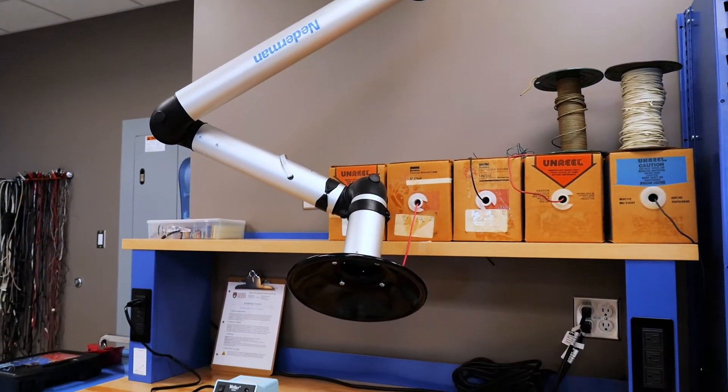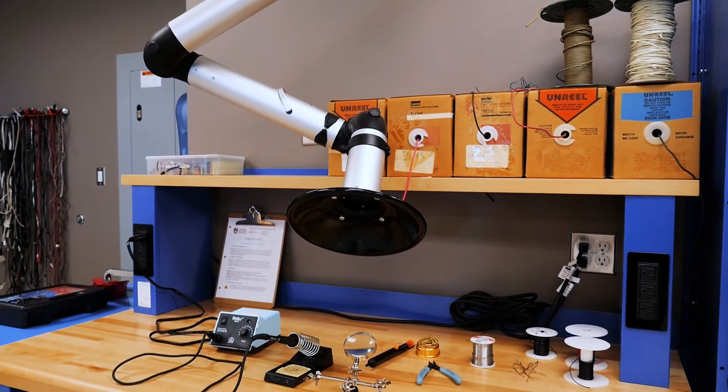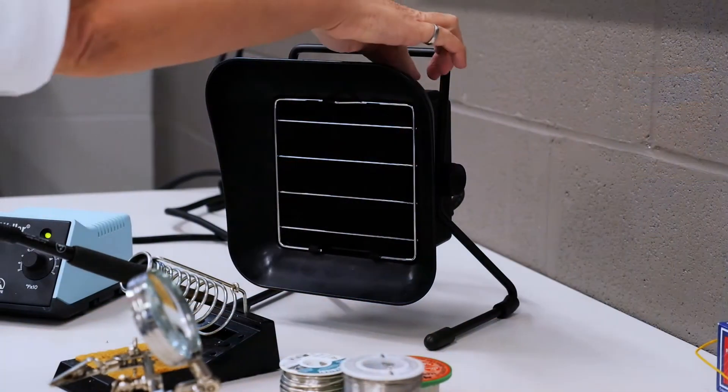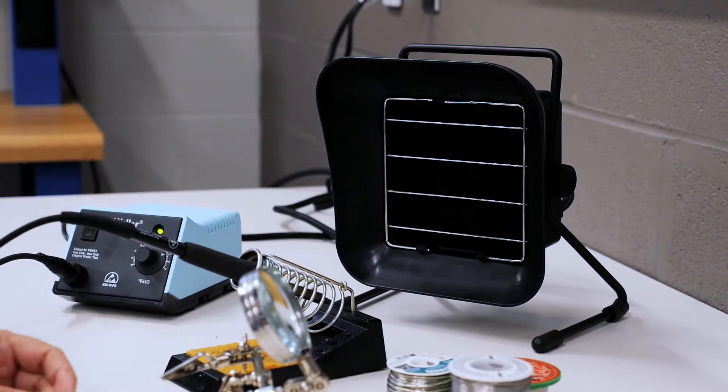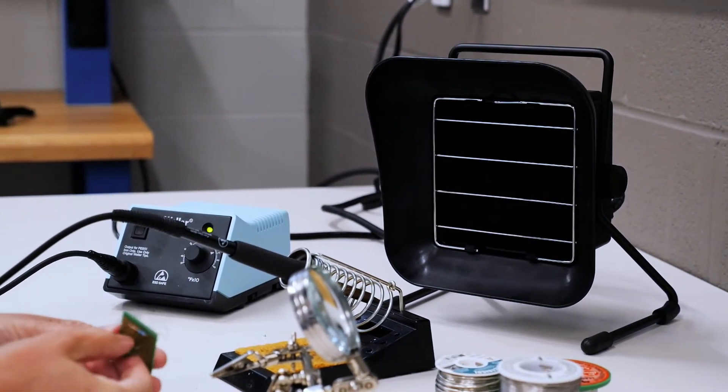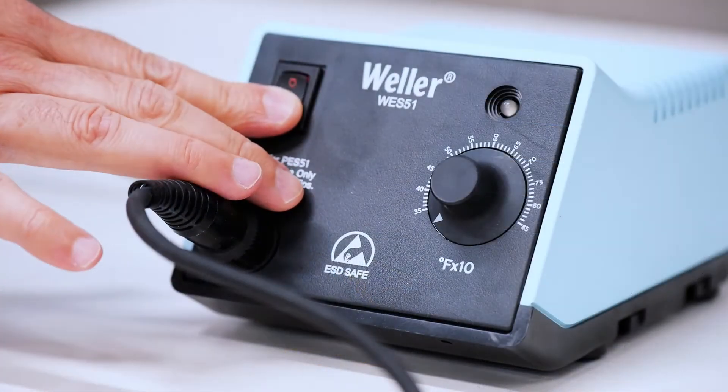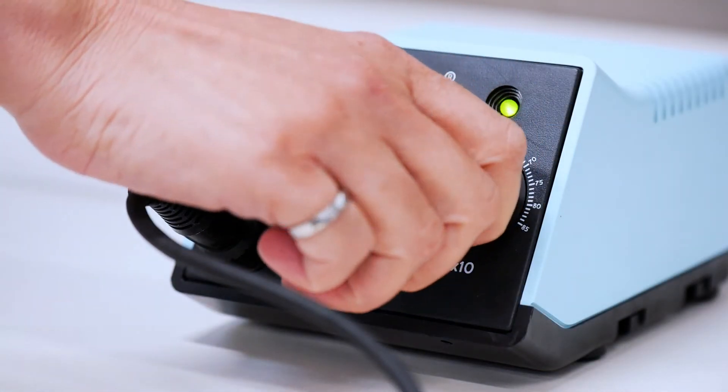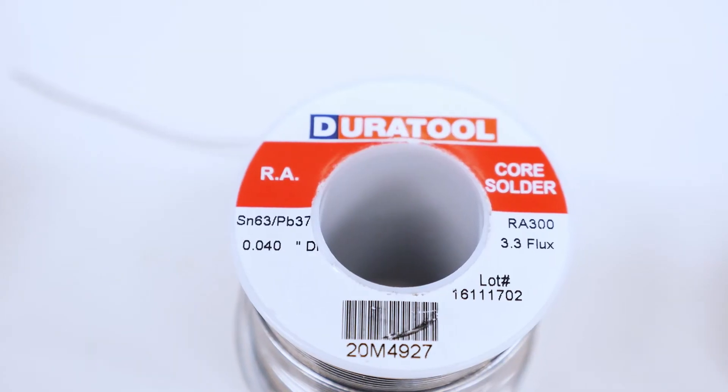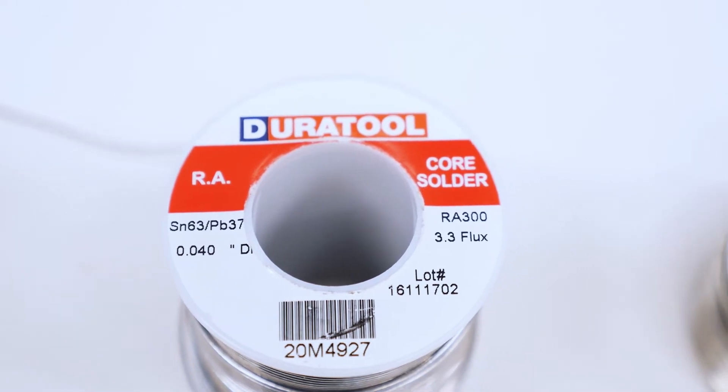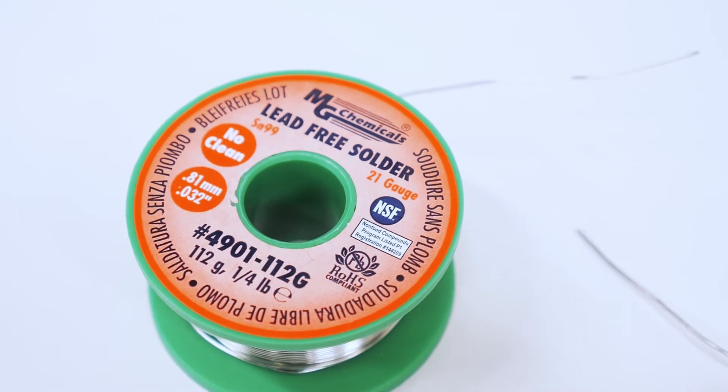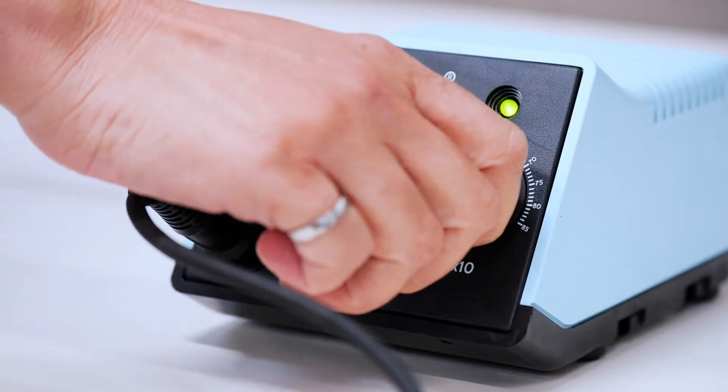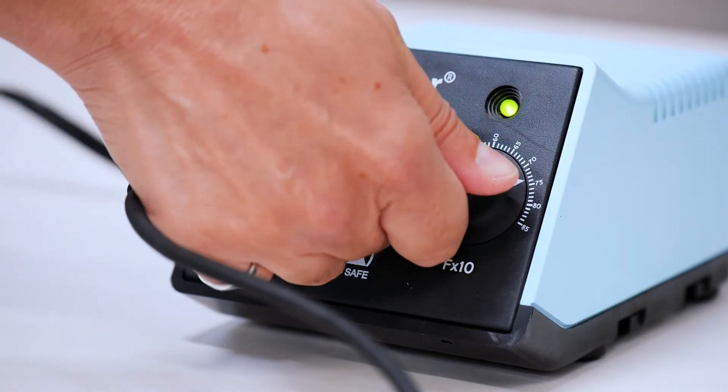In the lab both direct exhaust fume extractors as well as benchtop extractors with filters are available. Soldering fumes can cause long-term health effects even when lead-free. Turn on the soldering station adjusting the heat to the appropriate temperature. If you're using lead-based solder set the soldering station to 650 degrees Fahrenheit. If you're using the more common lead-free solder set the soldering station to 750 degrees Fahrenheit.